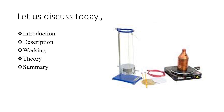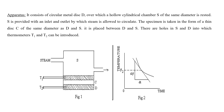The Lee's disc apparatus consists of a circular disc D, over which a hollow cylindrical steam chamber S of the same diameter is placed. The chamber S is provided with an inlet and outlet through which steam is passed. The steam heats the chamber, and heat is transferred by conduction.